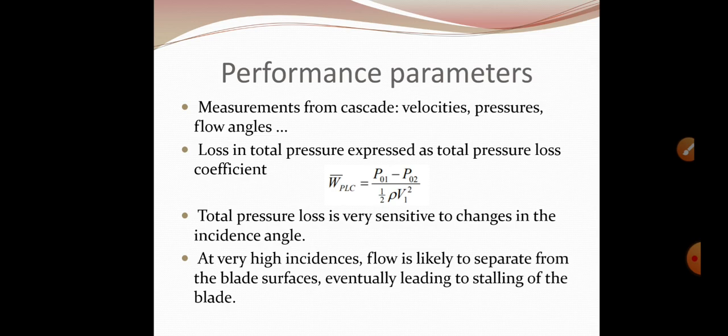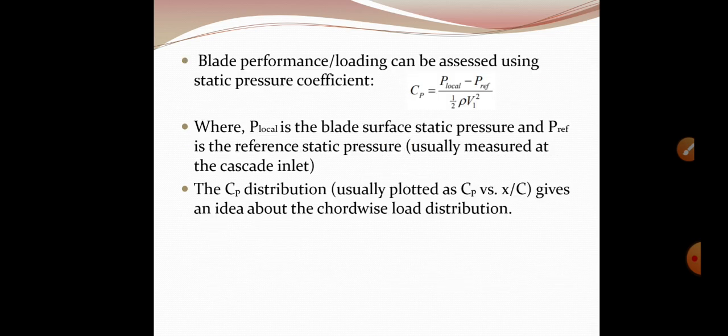Blade performance or loading can be accessed using static pressure coefficient, given as cp equals p local by p reference divided by half rho v1 square, where p local is blade surface static pressure and p reference is the reference static pressure, usually measured at cascade inlet. The cp distribution, usually plotted as cp versus x by c, gives an idea about chord wise load distribution.